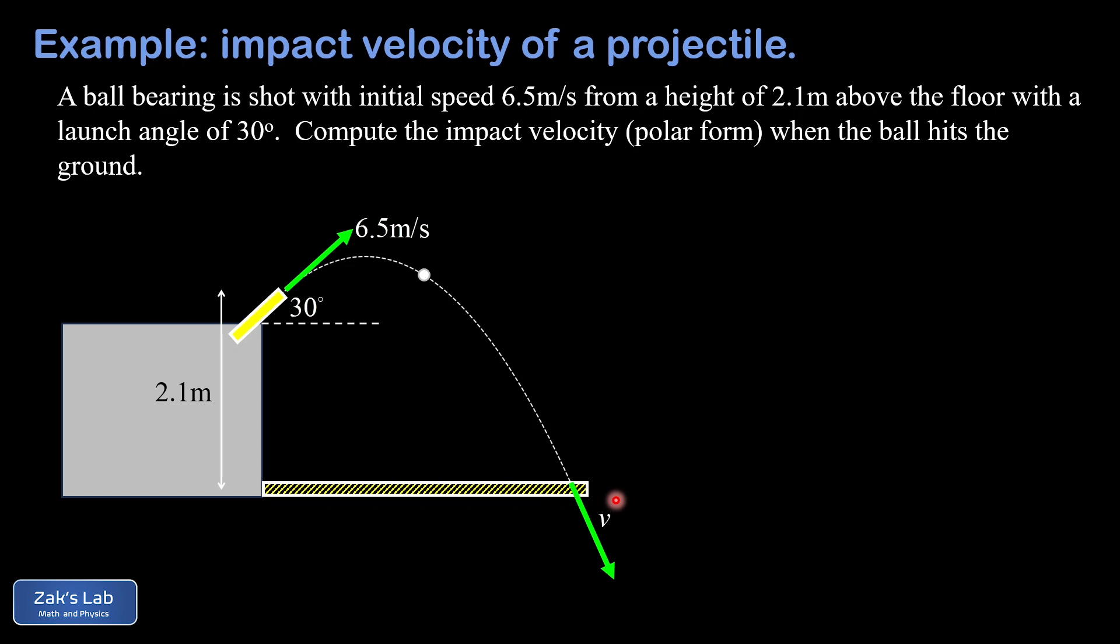We have a pretty standard setup for a projectile launch here. This projectile has launched 2.1 meters off the ground, it has an initial speed of 6.5 meters per second, and the launch angle is 30 degrees.